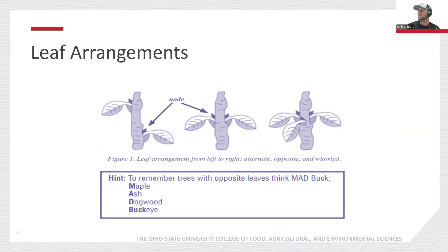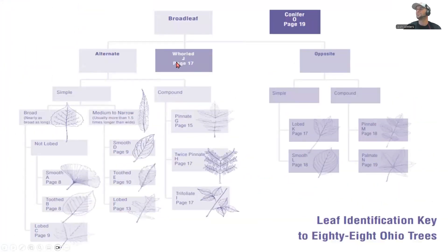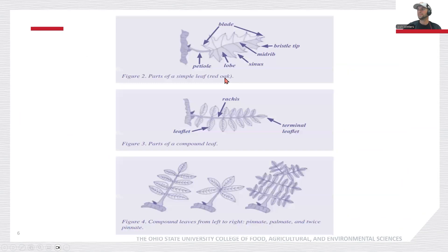A hint for Ohio trees: most trees that are opposite can be remembered with the phrase 'MAD Buck' — maple, ash, dogwood, or buckeye trees. Once we've identified the leaf pattern, we want to identify whether we're looking at a simple or compound leaf. Simple leaves have just one single leaf attached to the branch. Compound leaves are different — one branch will have leaflets on each side, and all those leaflets together make up one whole compound leaf.